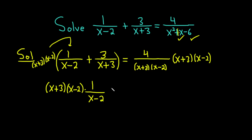And then x plus 3, x minus 2 times 3 over x plus 3. That will be x plus 3. And then x minus 2 times, and then here we have 3 over x plus 3.